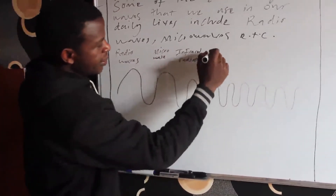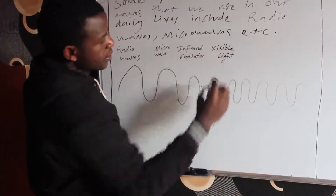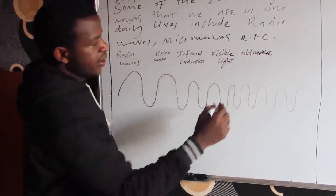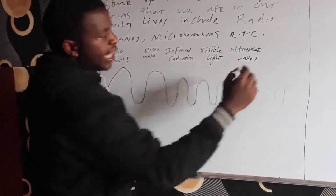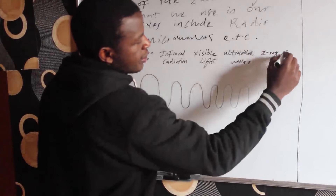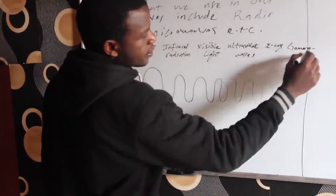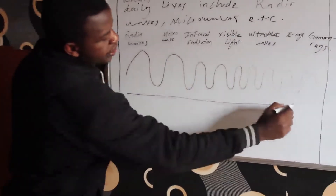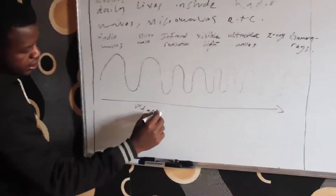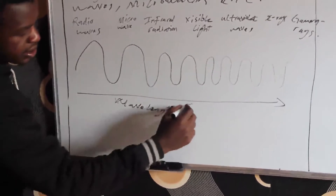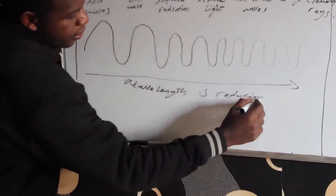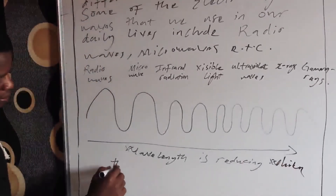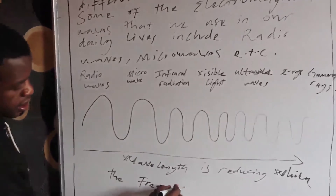Then we also have the visible light, ultraviolet waves, X-rays, and gamma rays. Moving from left to the right, the wavelength is reducing while the frequency is increasing.